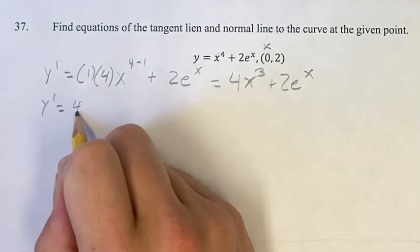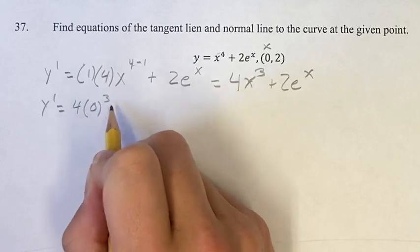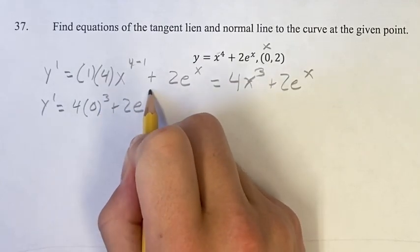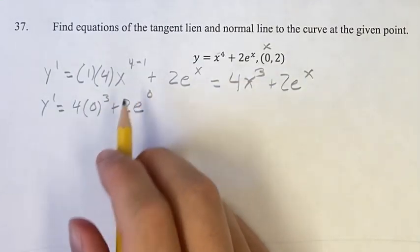So this is going to be 4 times 0 cubed, plus 2e to the 0. Plugging in 0.